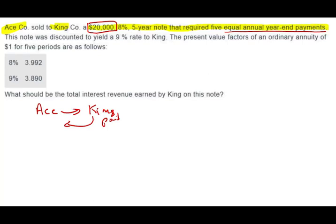So remember King paid Ace, but King wants to earn 9%. The note pays 8%. King wants to earn 9%. Although the note says you're going to get 8%, King says yes, I will buy the note, but I want to make sure whatever I pay, I earn 9%.